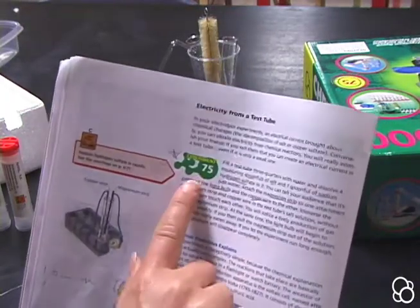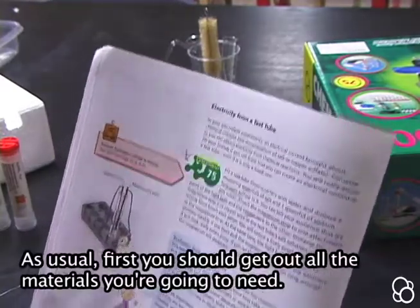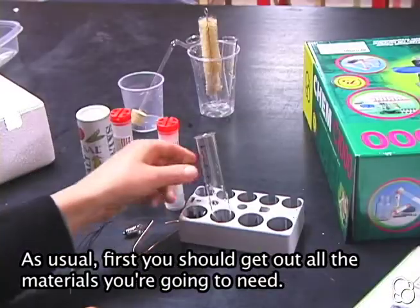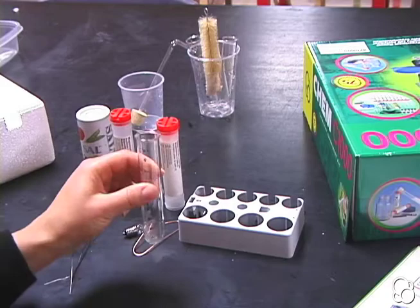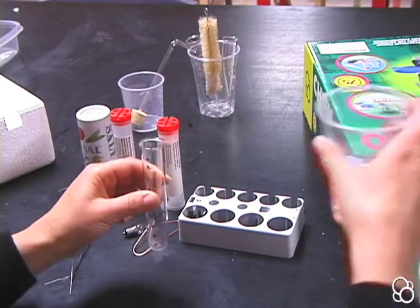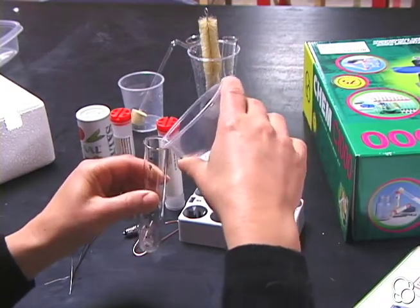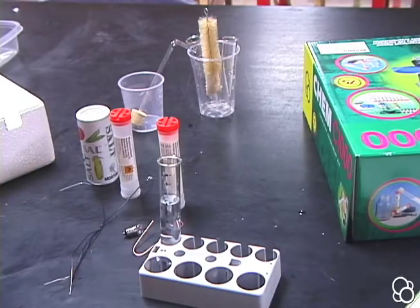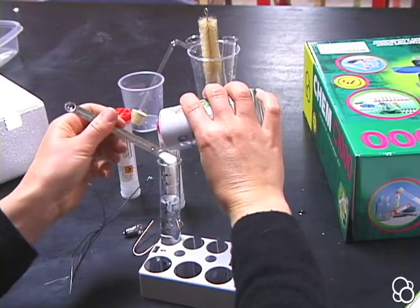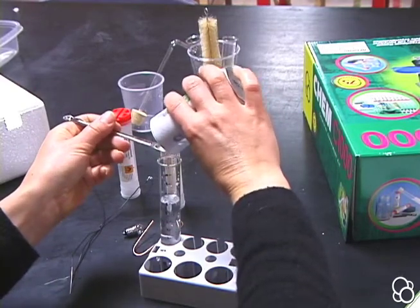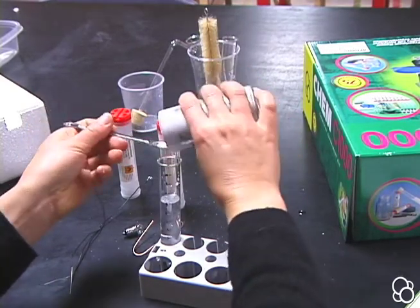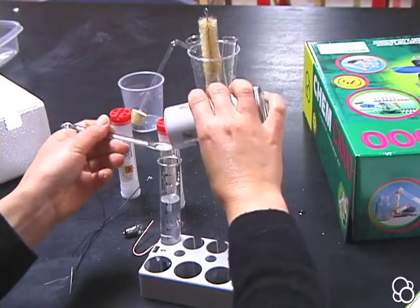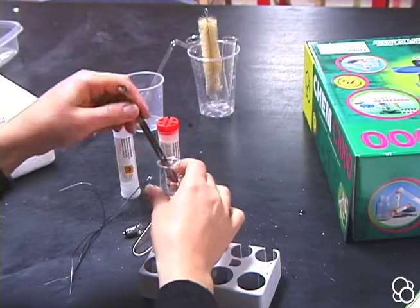Now we're going to do Experiment 75, electricity from a test tube. We're going to start by adding seven centimeters of water into the test tube, and then put four spoonfuls of salt in it. One, two, three, and four. We're going to mix it up.